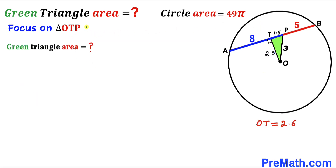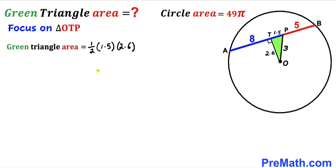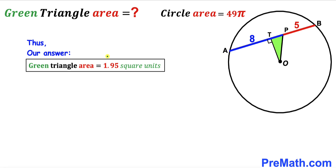Finally, focusing on the green triangle OTP, we calculate its area using the formula: area = ½ × base × height. The base is 1.5 and the height is 2.6, so the area = ½ × 1.5 × 2.6 = 1.95 square units. Thus the area of the green shaded triangle is 1.95 square units. Thanks for watching and please don't forget to subscribe!